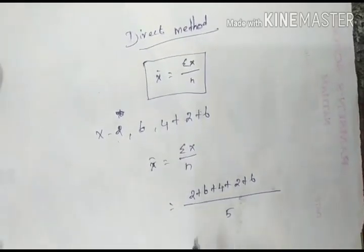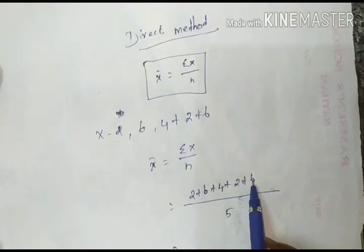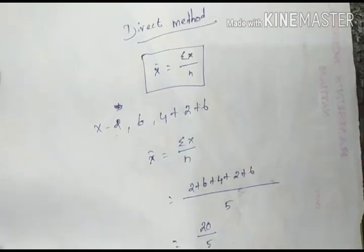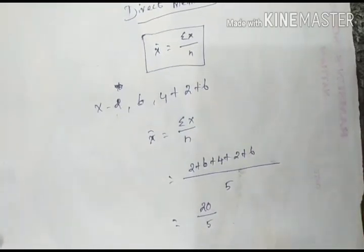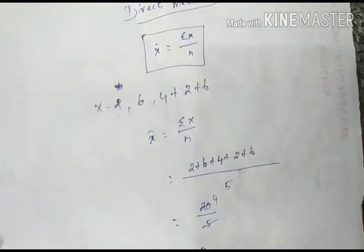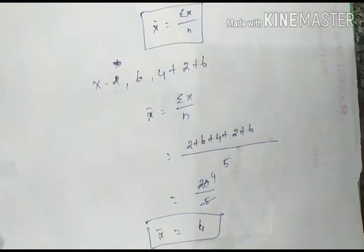So if we add all these values: 6 plus 4 is 10, 2 plus 2 is 4, giving us 20 divided by 5. The last answer is 4. So 20 ÷ 5 = 4. Very simple. This is the direct method.